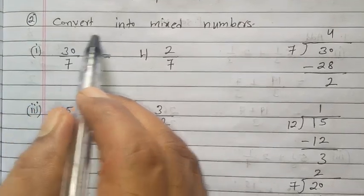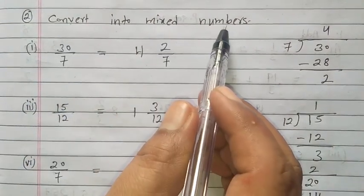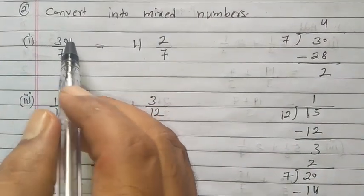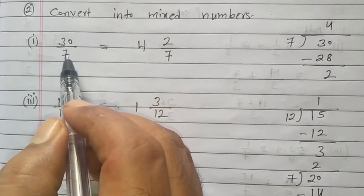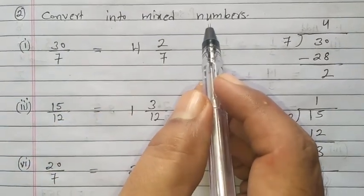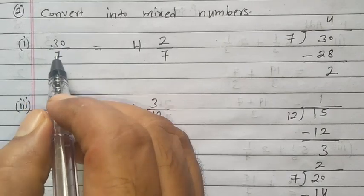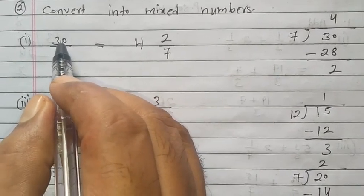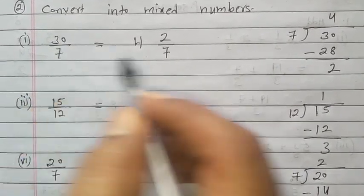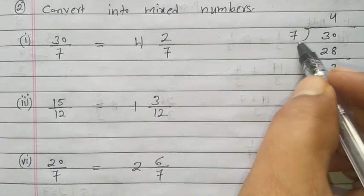Question Number 2. Convert into mixed numbers. That means improper fraction is given, we want to convert into mixed number. So here is 30/7. That means 30 divided by 7. So 30 right here, 7 right here. Now divide. How many times?